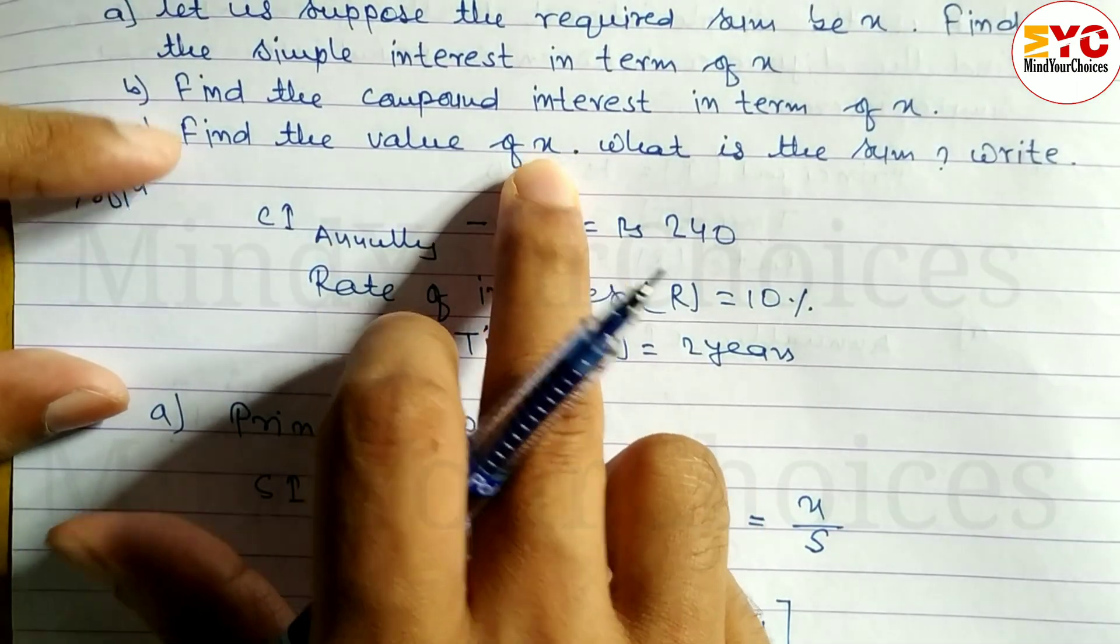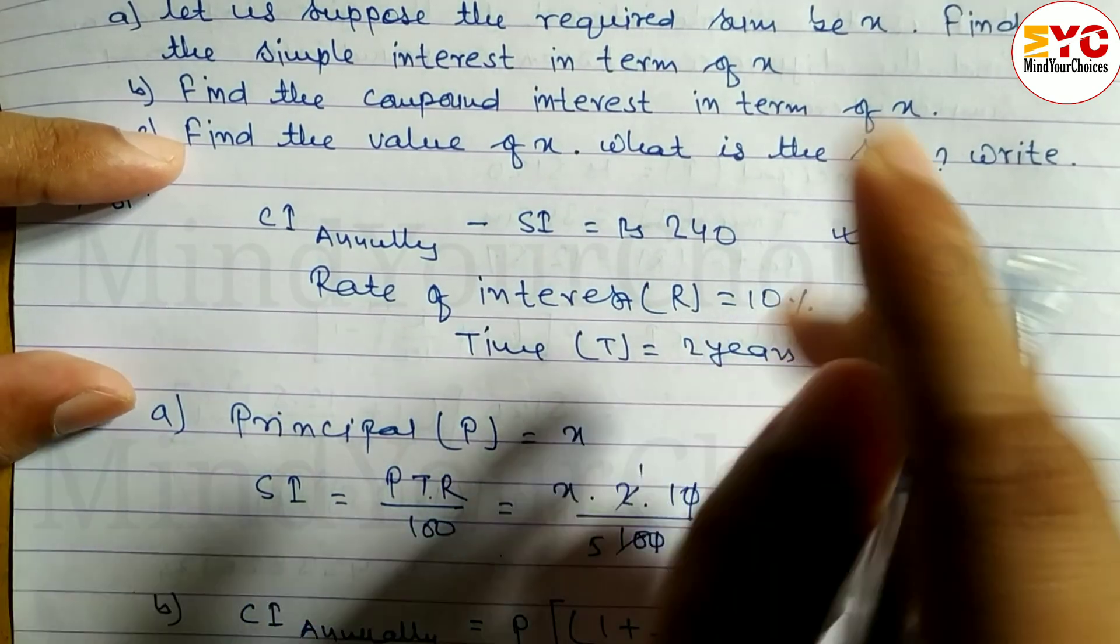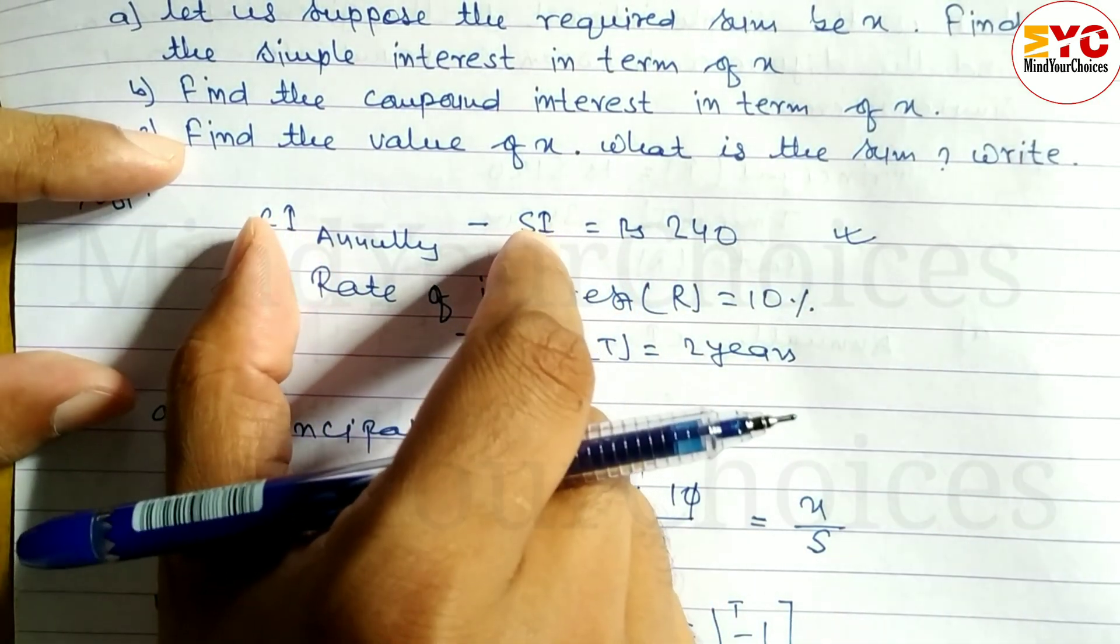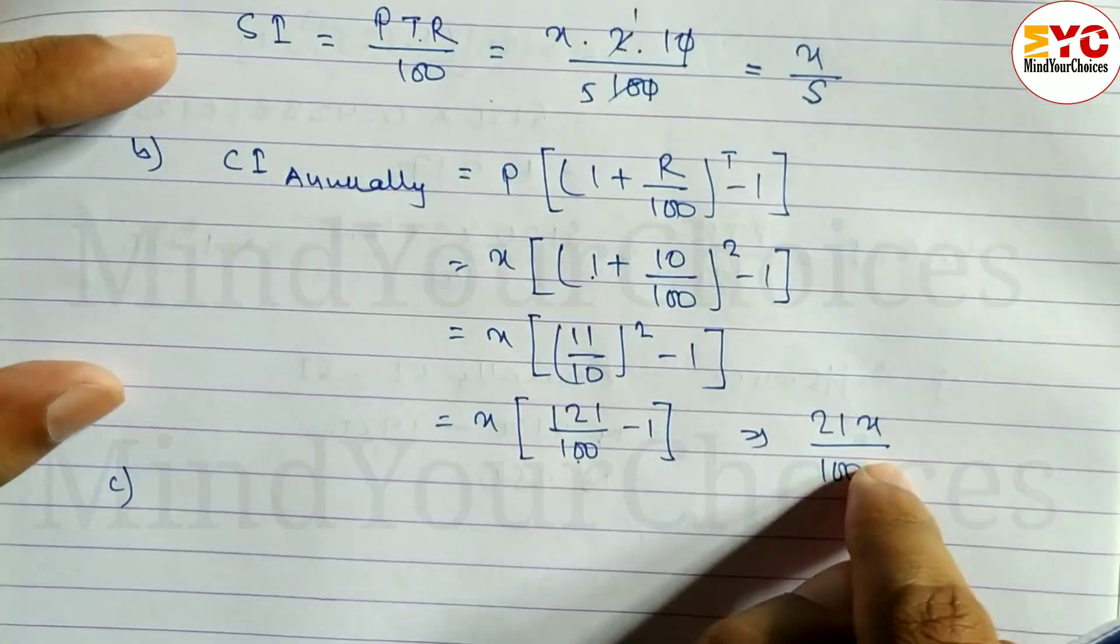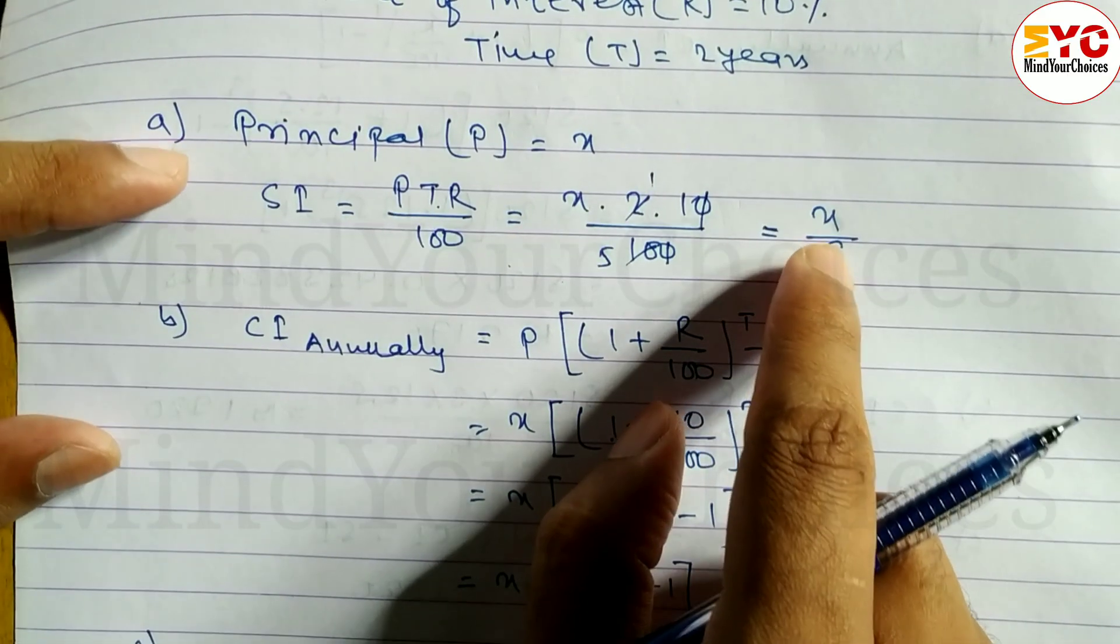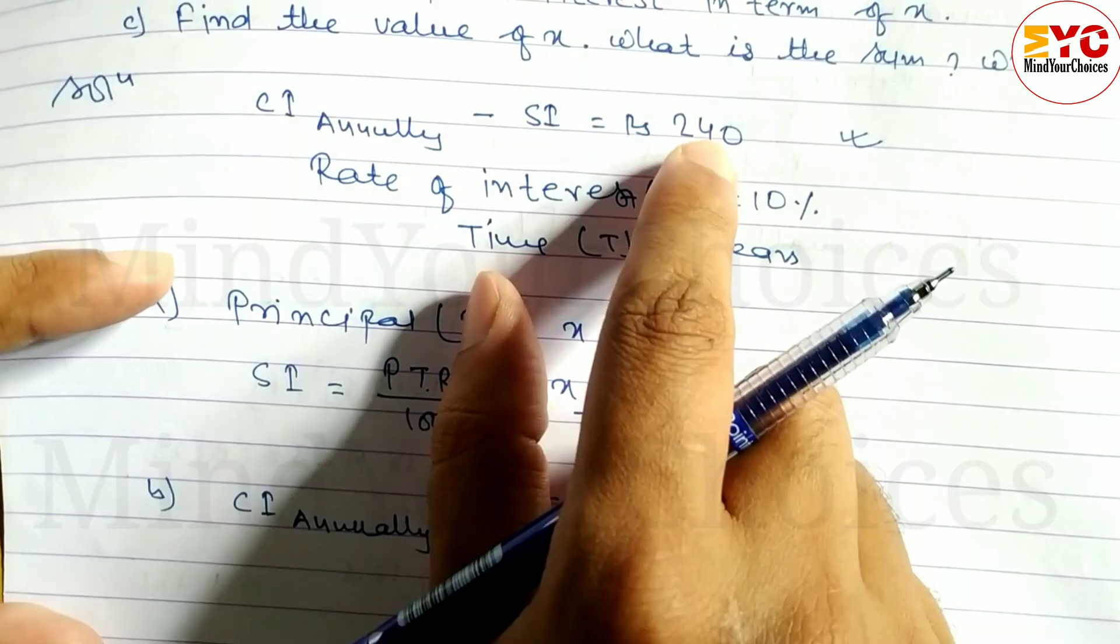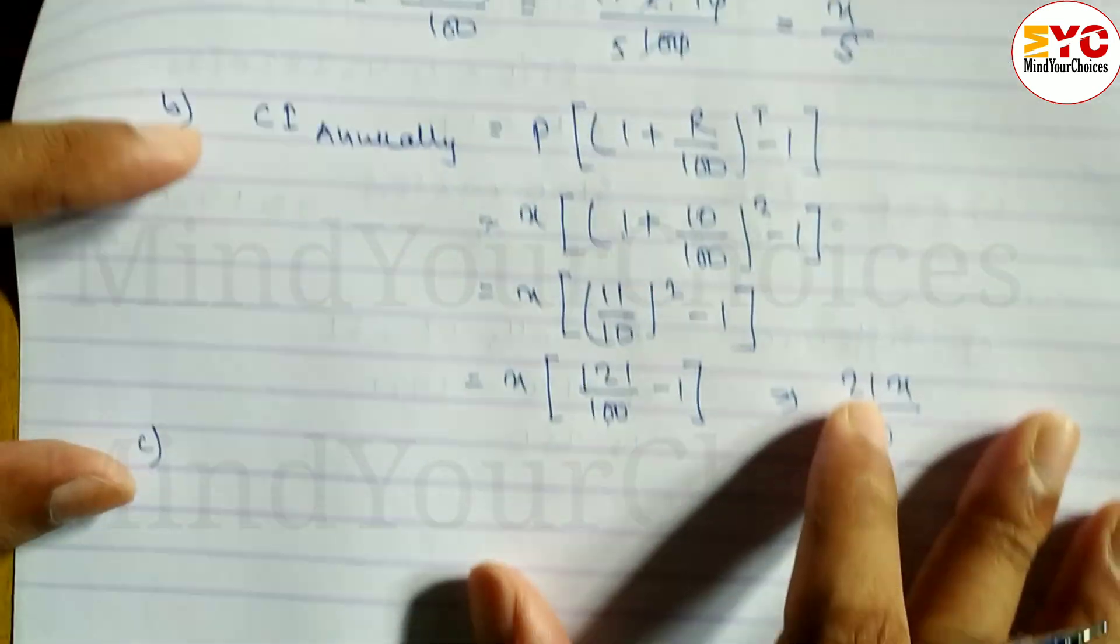In part c, find the value of x. Now we will put the CI and SI values here. The difference is 240. CI value we found is 21x by 100, SI value is x by 5, which equals 240.